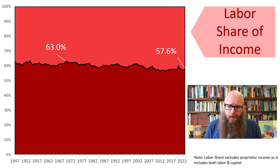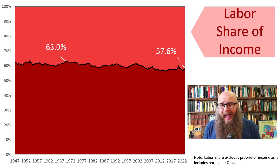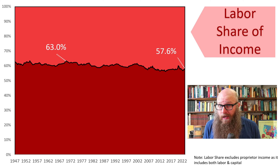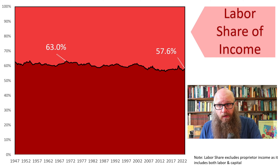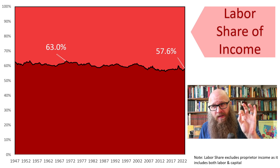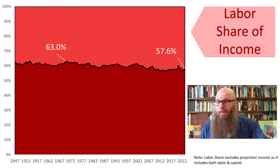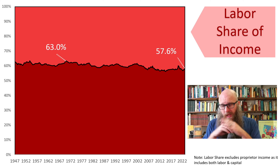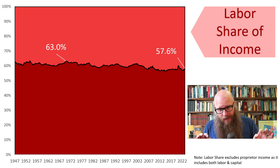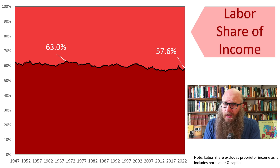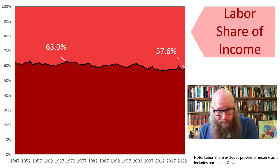A measurement that has gotten a lot of attention among economists has been the decline over the past 50 years of the labor share of income. It had been pretty stable for nearly a half century at well over 60%. The last peak was in 1970 at 63%. There was a slight decline until the year 2000, and it's been declining since. Now it sits around 57.6%. One may say this drop isn't that significant, but a difference of 5 to 6 percentage points in an economy of dozens of trillions means a lot of resources.